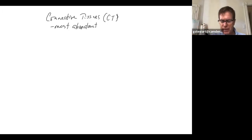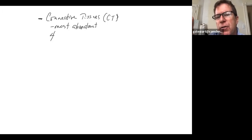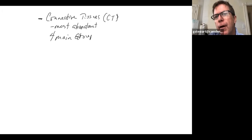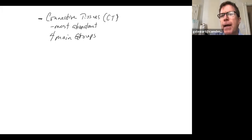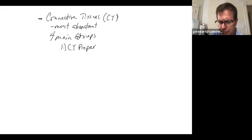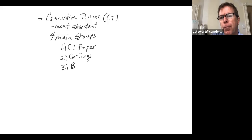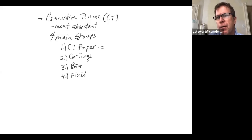Some general characteristics: your book classifies connective tissues into four main groups. Different books do different things, but I'll stick with this particular publisher. They classify them as connective tissue proper, cartilage, bone, and fluid. Connective tissue proper has subgroups: loose and dense.